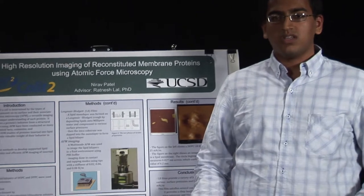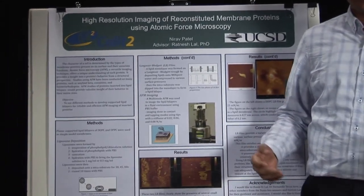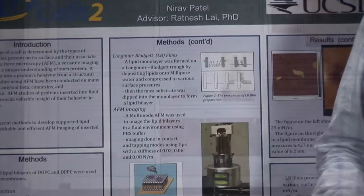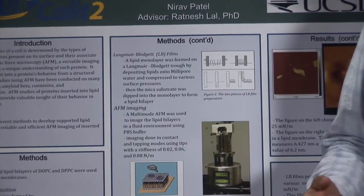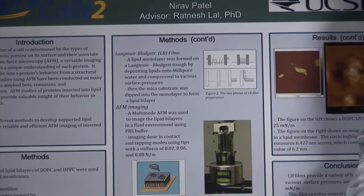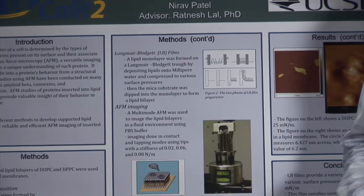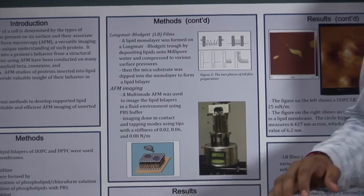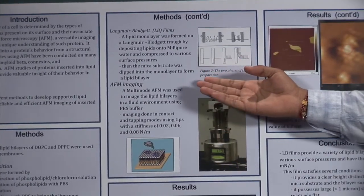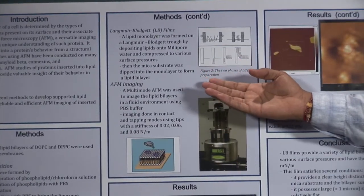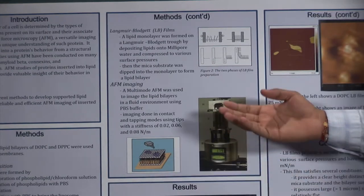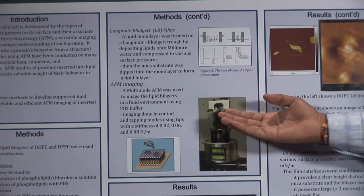The second technique that I used was Langmuir Blodgett Films (LB Films). I deposited phospholipids onto a water trough and coated the surface with a monolayer of phospholipids. I used barriers to compress it to a certain surface area and deposited it onto mica by dipping the mica in and out of this monolayer.